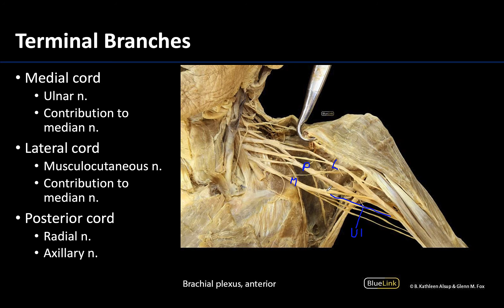The medial cord also provides a contribution to the median nerve. The lateral cord similarly provides a contribution to the median nerve — you can see it forms a V shape before continuing as the median nerve. The median nerve supplies the majority of muscles in the anterior compartment of the forearm and a few muscles in the hand.